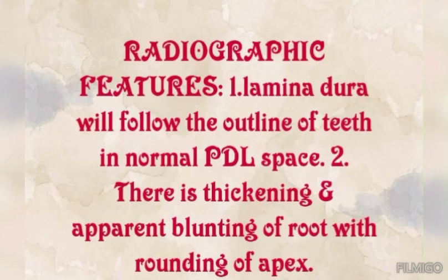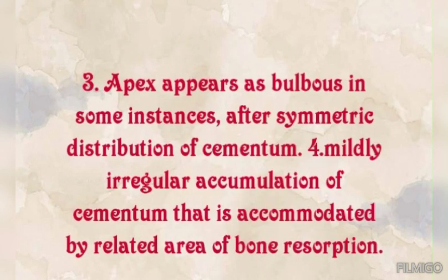The radiographic features: the laminar dura will follow the outline of the teeth with normal periodontal space. There is thickening and apparent blending of the root with a rounding apex. The apex appears bulbous in some instances after symmetric distribution of the cementum.